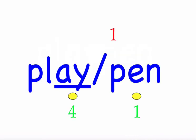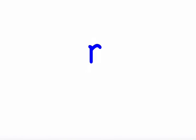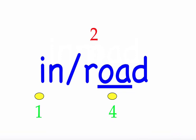The next word is 'inroad.' I will make an inroad into that relationship. First syllable 'in' — two sounds, I-N. Second syllable 'road' — three sounds, R-O-A-D. Mark the word. Inroad.